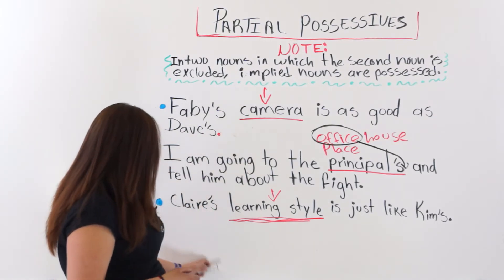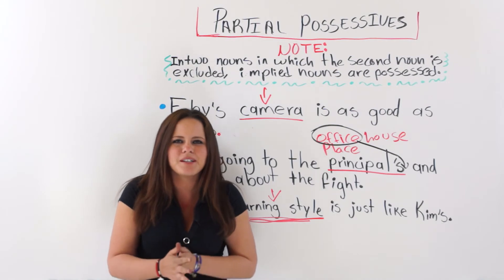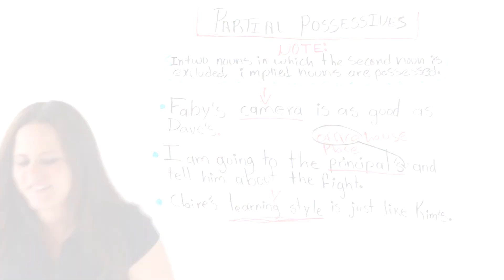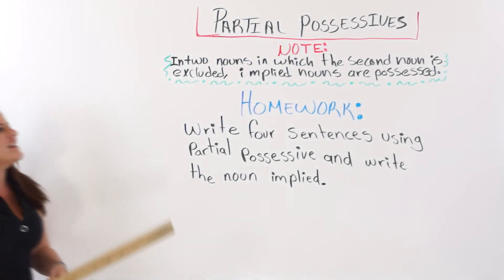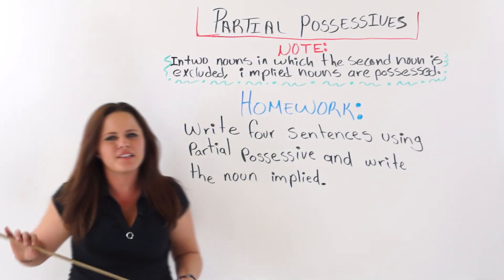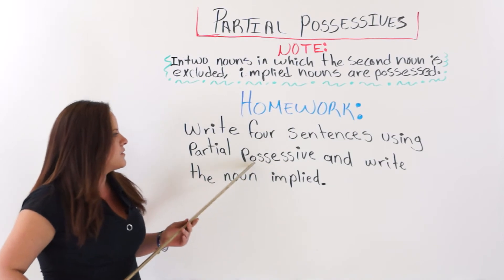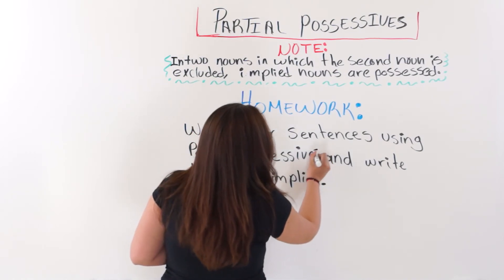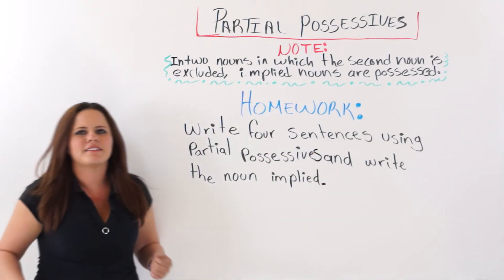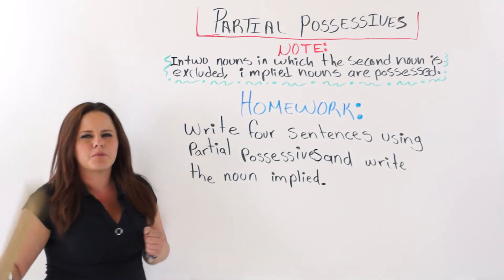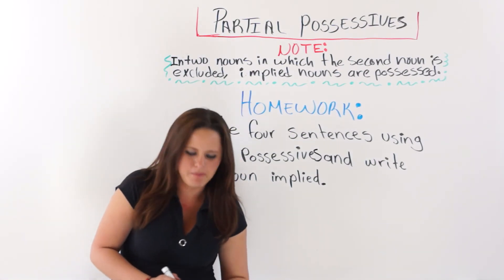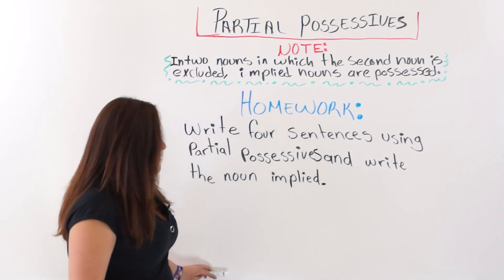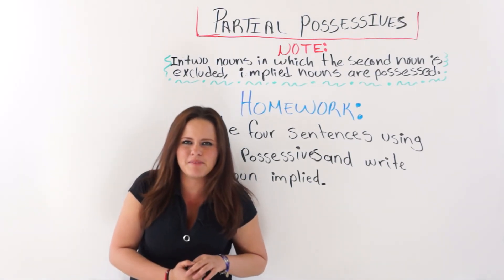Next, I will leave you some homework. Remember to do it because if you don't use English, you are definitely going to lose English. For homework, you are going to write four sentences using partial possessives and write the implied noun in parentheses. If you have a workbook, please do your homework there — we have some extra examples. If you do not have one, please leave your homework in the comment section below this video.